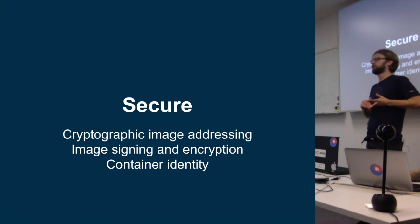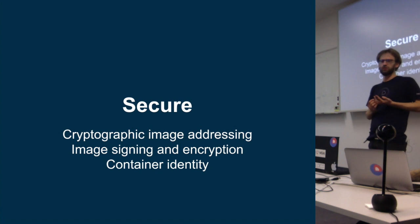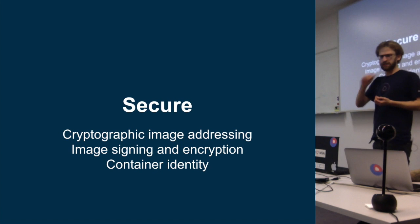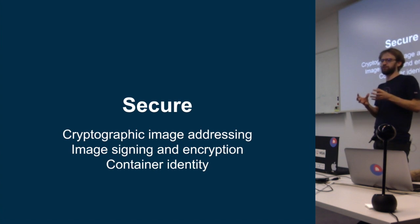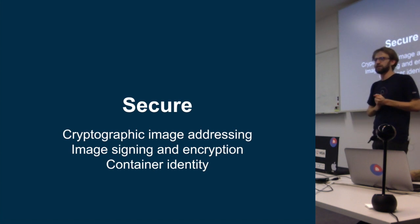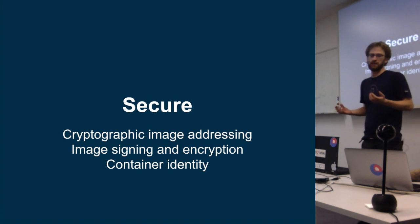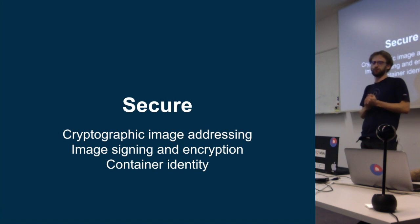The second component is image signing and encryption — we want these to be the default behavior. We want everyone to be thinking about these and using them in their implementations. The third thing is this idea of container identity: we want every application container that's running to have its own identity and be able to verify the identity of what other application it's talking to. This is a concept that companies like Google use extensively internally — every communication between applications at Google has this idea of being able to authenticate who you're talking to.